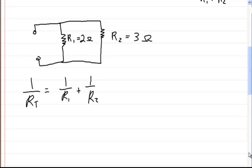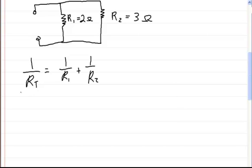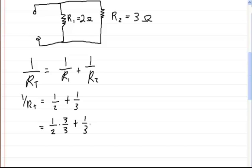So in the first method, 1 over RT is equal to 1 over 2 plus 1 over 3. We need a common denominator, so multiply 1/2 by 3/3 and 1/3 by 2/2, so we can add them together. That gives us 3 over 6 plus 2 over 6, which equals 5 over 6, and that equals 1 over RT.